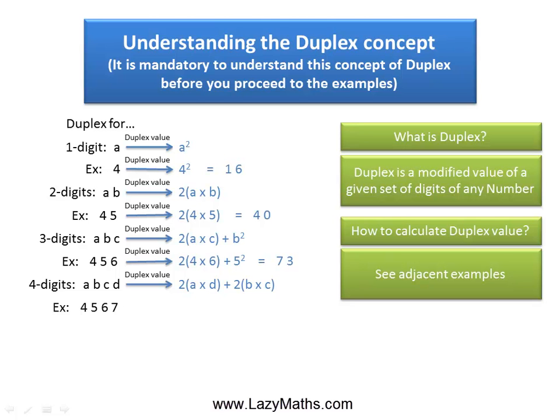So, if we have 4567 as the number, the duplex value for 4567 is given as 2 times 4 times 7, plus 2 times 5 times 6, which is equal to 116.